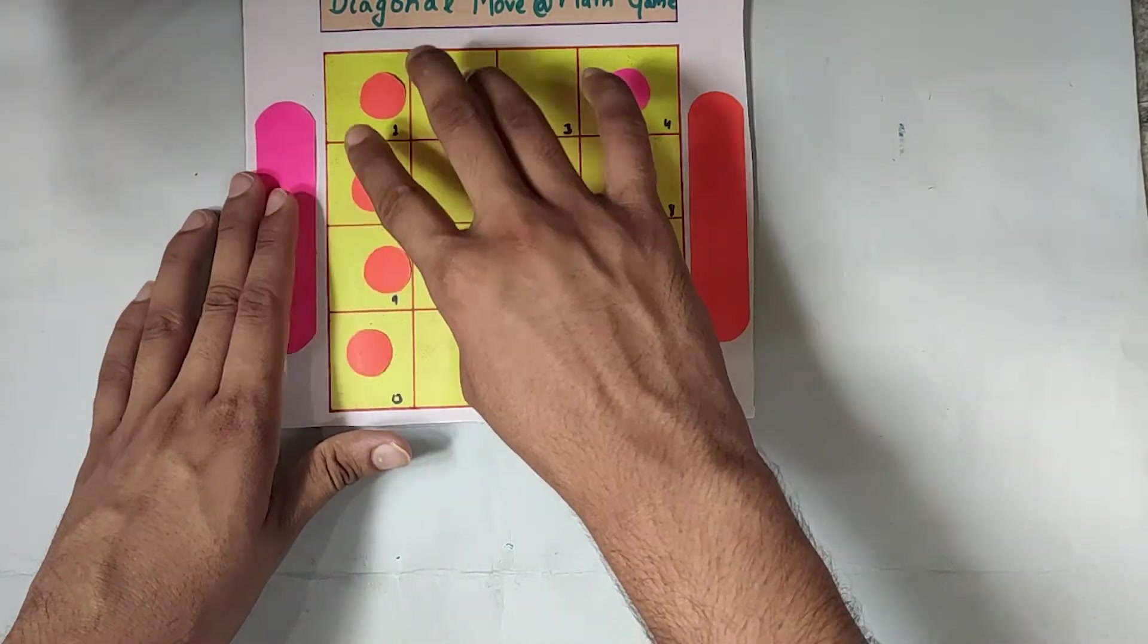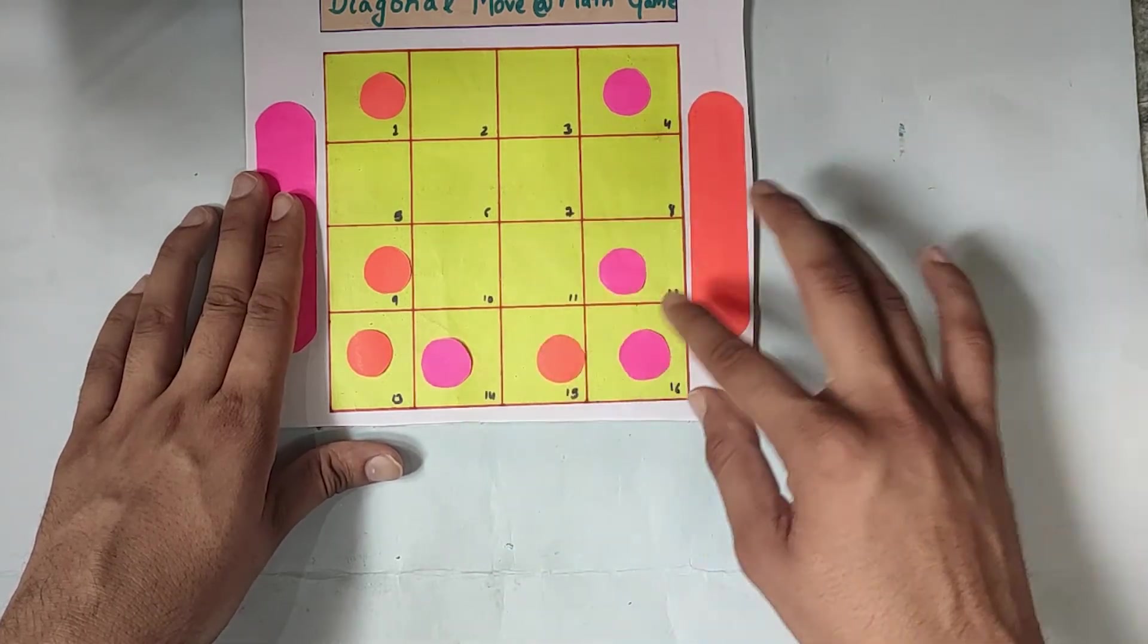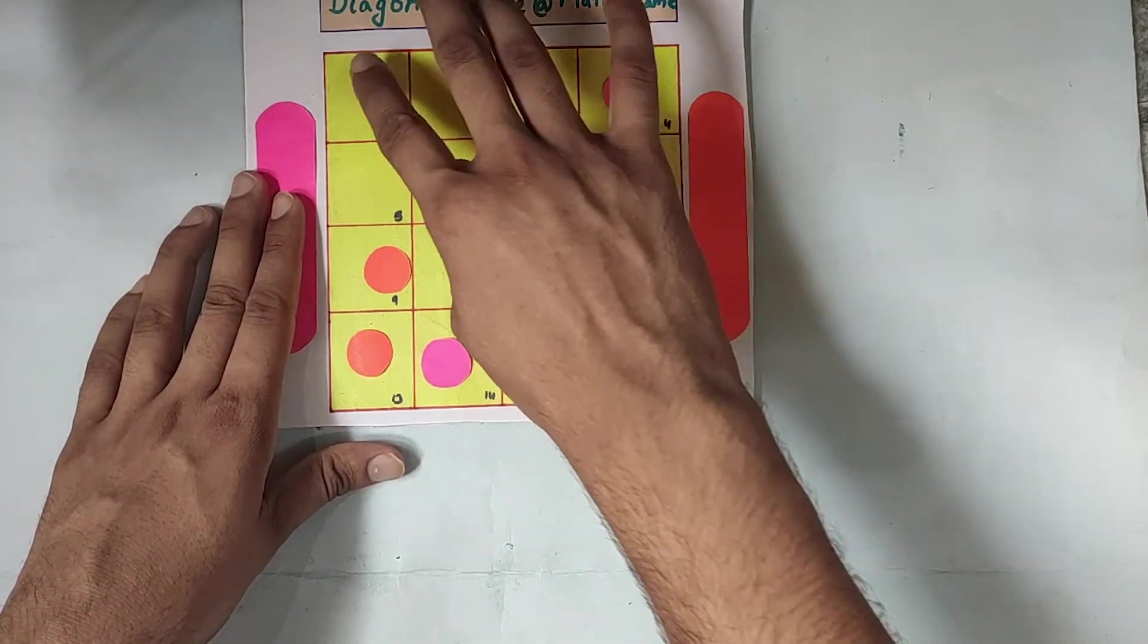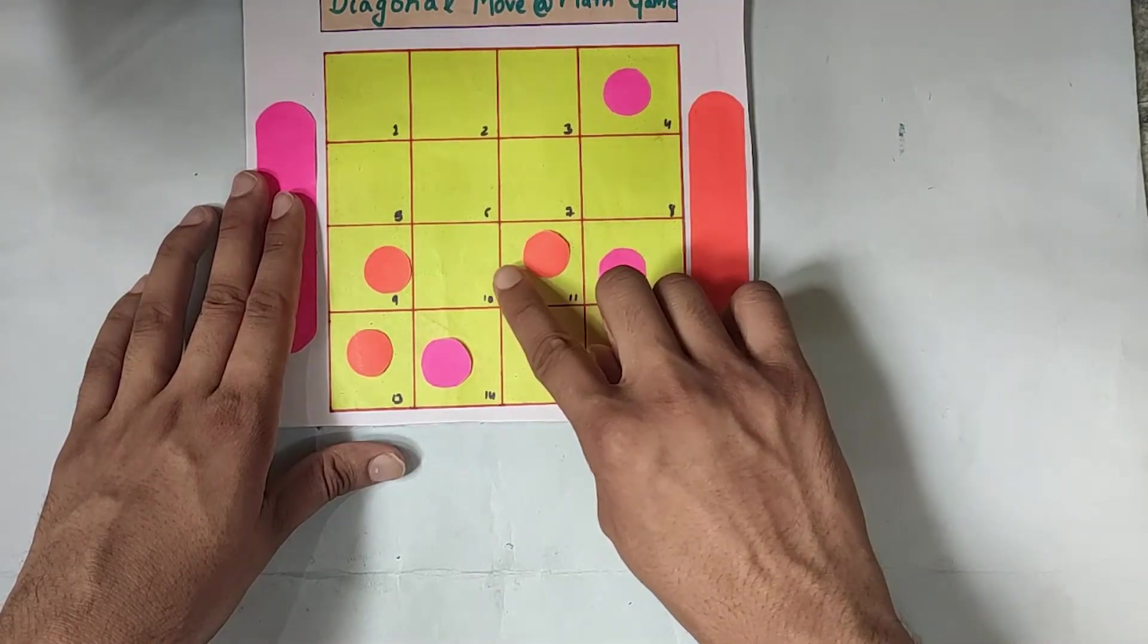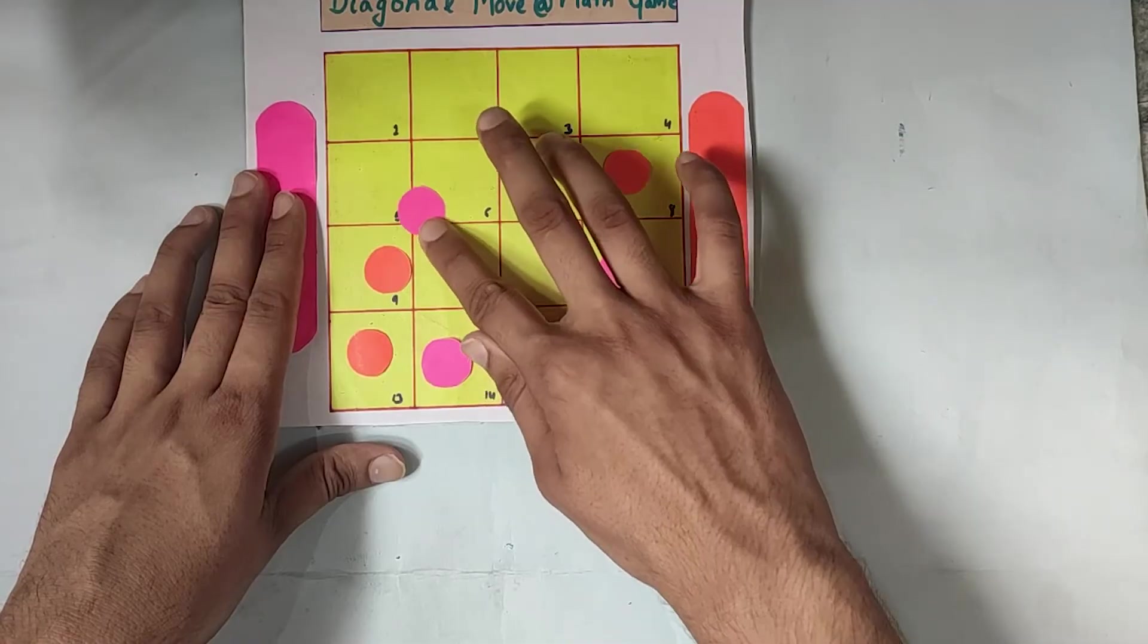Let's move it to here. One step. Two step. Three step. Four step. Five step. And it's six step.